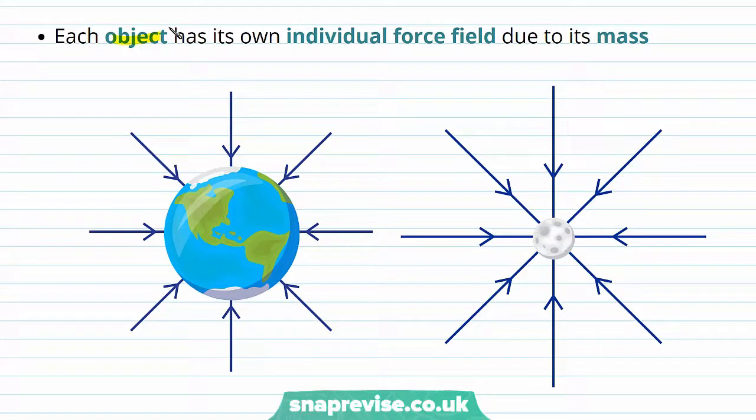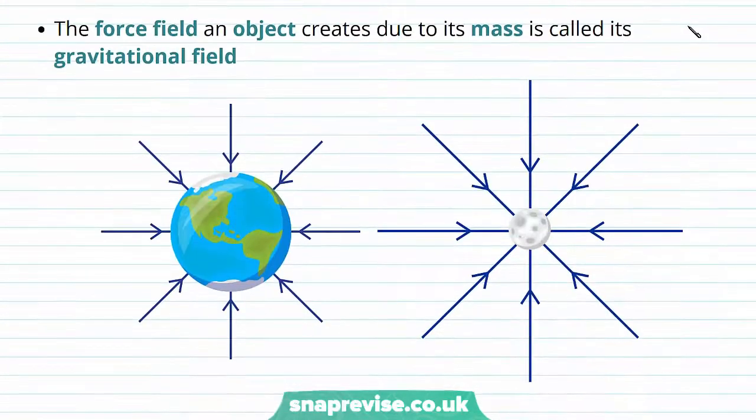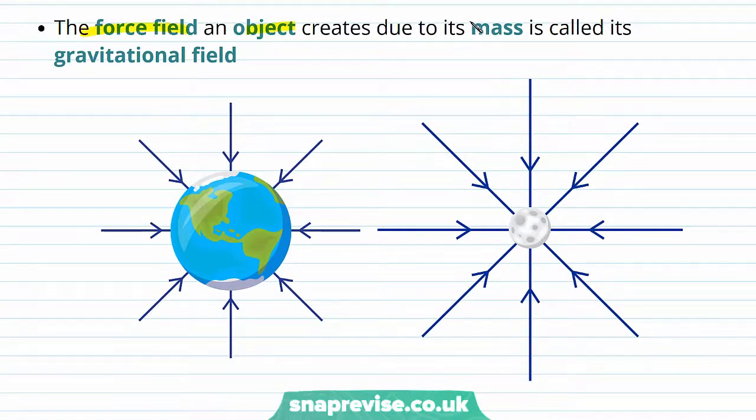Every object is going to have its own individual force field due to its mass. So both the Earth and the Moon have a force field. The force field that an object creates due to its mass is called its gravitational field. So here are the field lines of the gravitational fields of the Earth and the Moon.